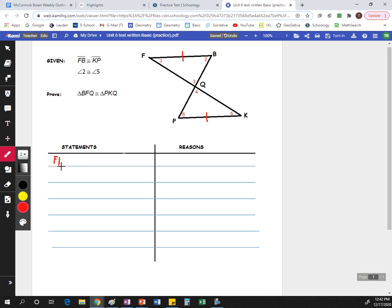FB is congruent to KP. Don't forget that you want to include the correct symbols for everything. So segment FB is congruent to segment KP. The reason for that is given.